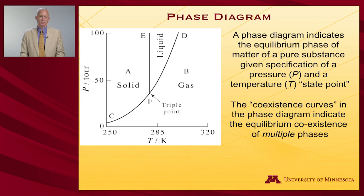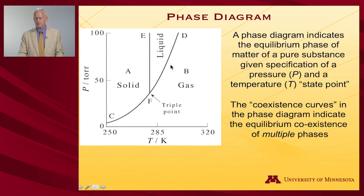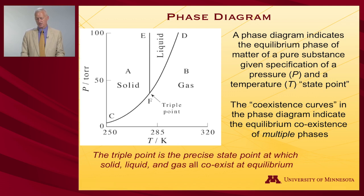On the phase diagram are certain curves called coexistence curves, which indicate the equilibrium coexistence of multiple phases. Along such a curve — for instance, with liquid on the left and gas on the right — both gas and liquid are present at that given temperature and pressure state point. There is also a point called the triple point, which is the precise state point — the single temperature and pressure — at which all three phases, solid, liquid, and gas, simultaneously coexist at equilibrium.